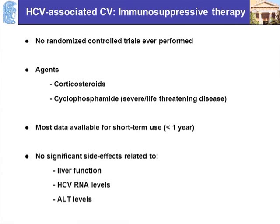Regarding immunosuppressive agents, there have never been any randomized controlled trials in these settings. Usually we use corticosteroids or cyclophosphamide, especially for severe or life-threatening disease. The data we have are for short-term use of less than a year, and during this period there don't seem to be significant side effects related to liver function, HCV RNA levels, or ALT levels. So these agents appear safe in terms of liver function.